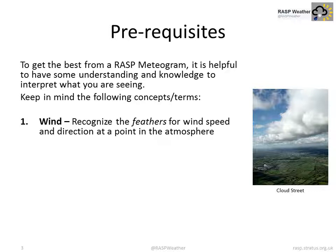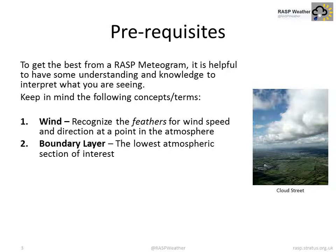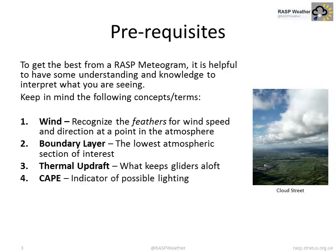Recognise the feathers for wind speed and direction at a point in the atmosphere. Boundary layer: the lowest atmospheric section of interest. Thermal updraft: what keeps gliders aloft.